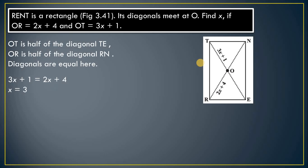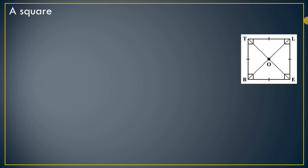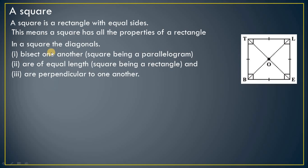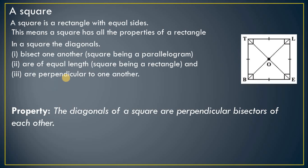A square has all sides equal, all angles of 90 degrees, and equal diagonals. A square can be seen as a rectangle with equal sides, so it has all the properties of a rectangle: opposite sides are equal, angles are equal, and diagonals are equal. In a square, the diagonals also bisect one another, are of equal length, and are perpendicular to one another. Therefore, the diagonals of a square are the perpendicular bisectors of each other.